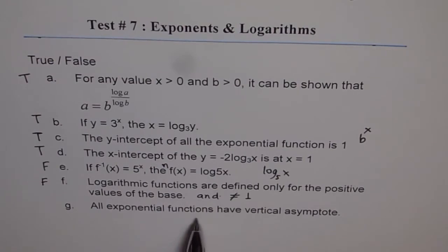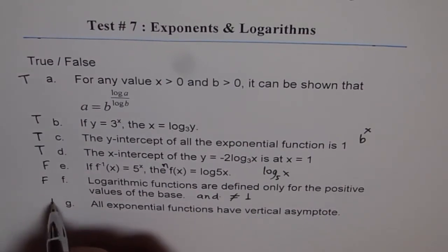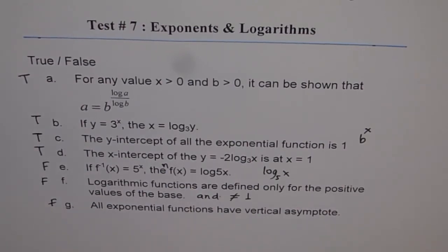All exponential functions have vertical asymptote. They have horizontal asymptote, not vertical, right? So this is also false. Thank you.